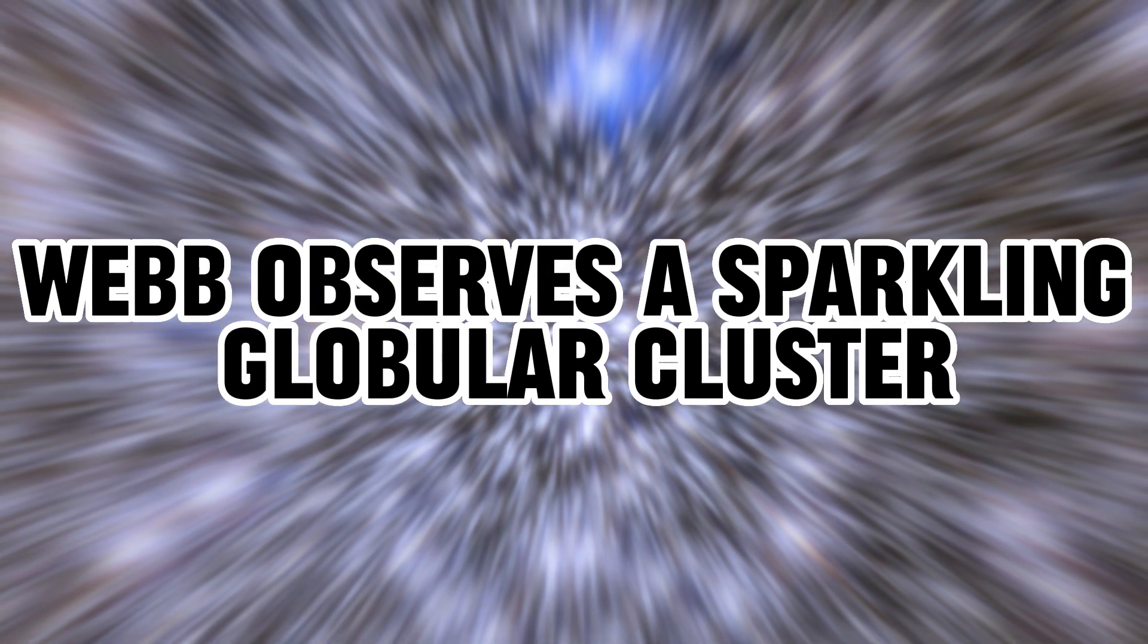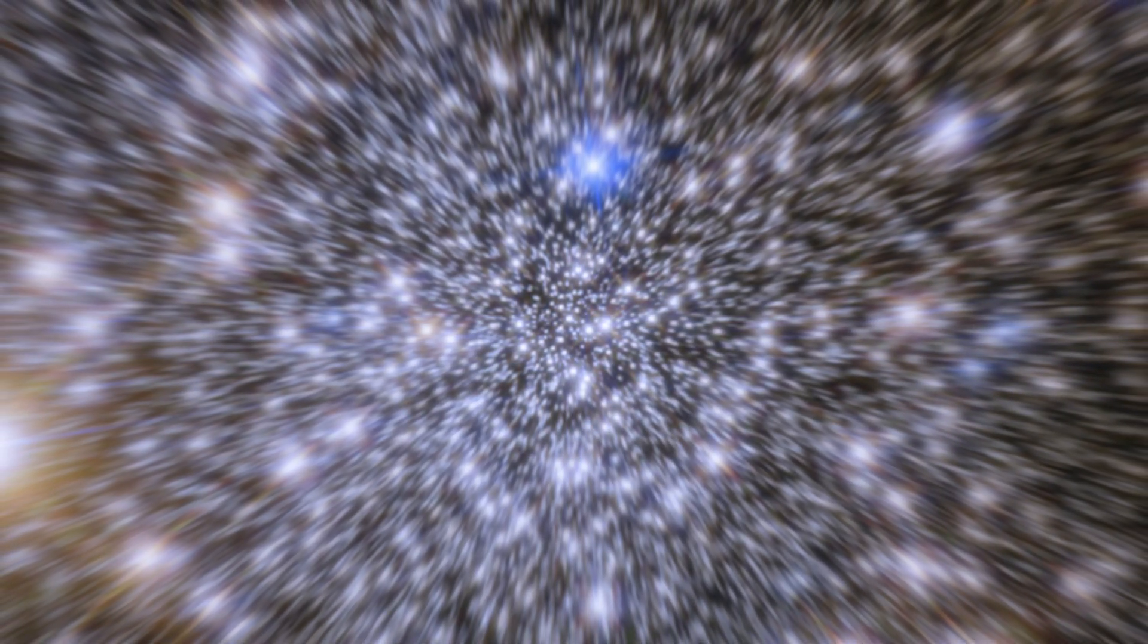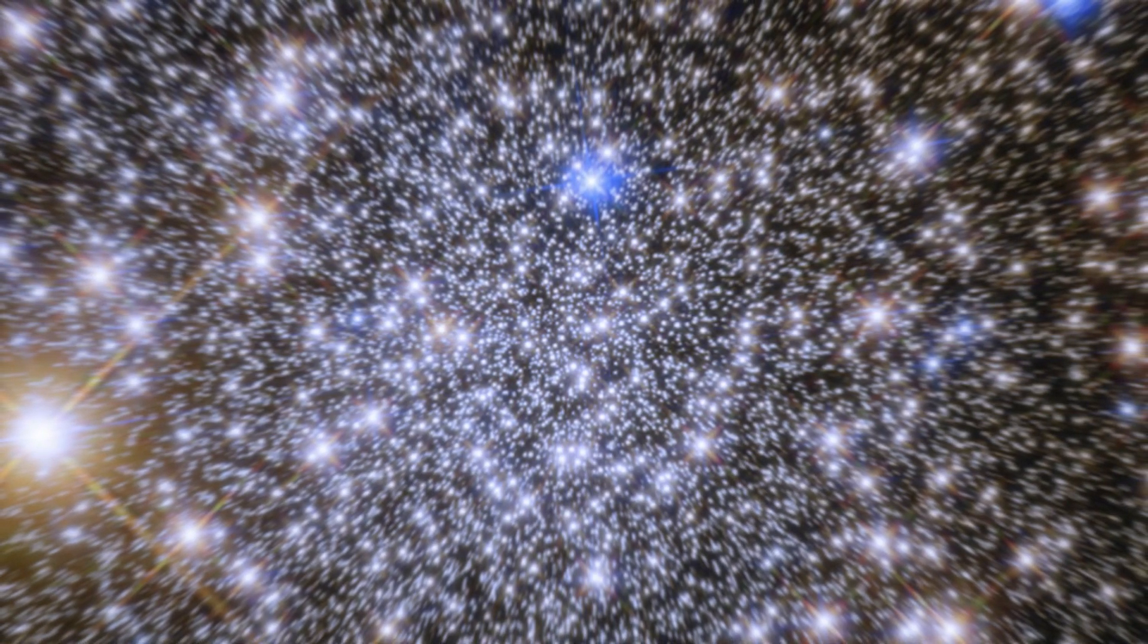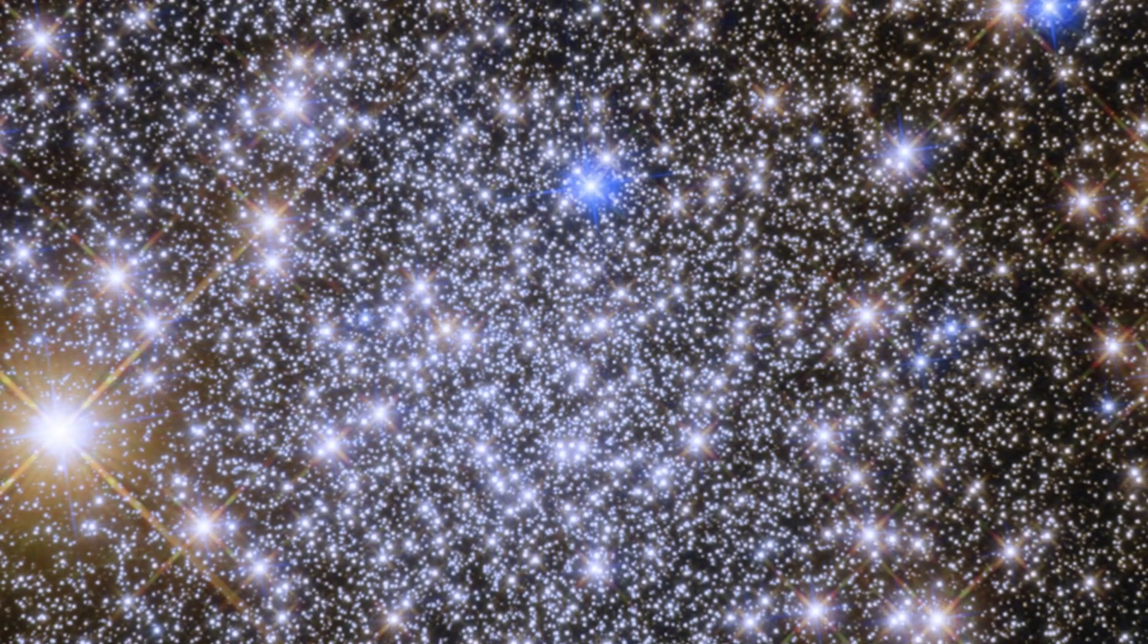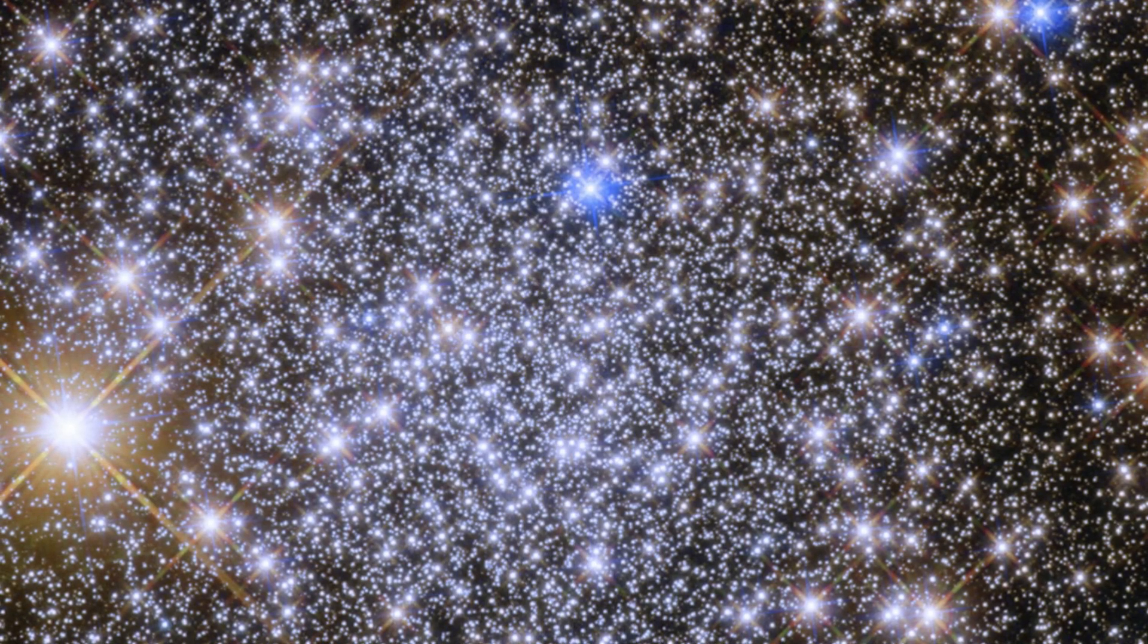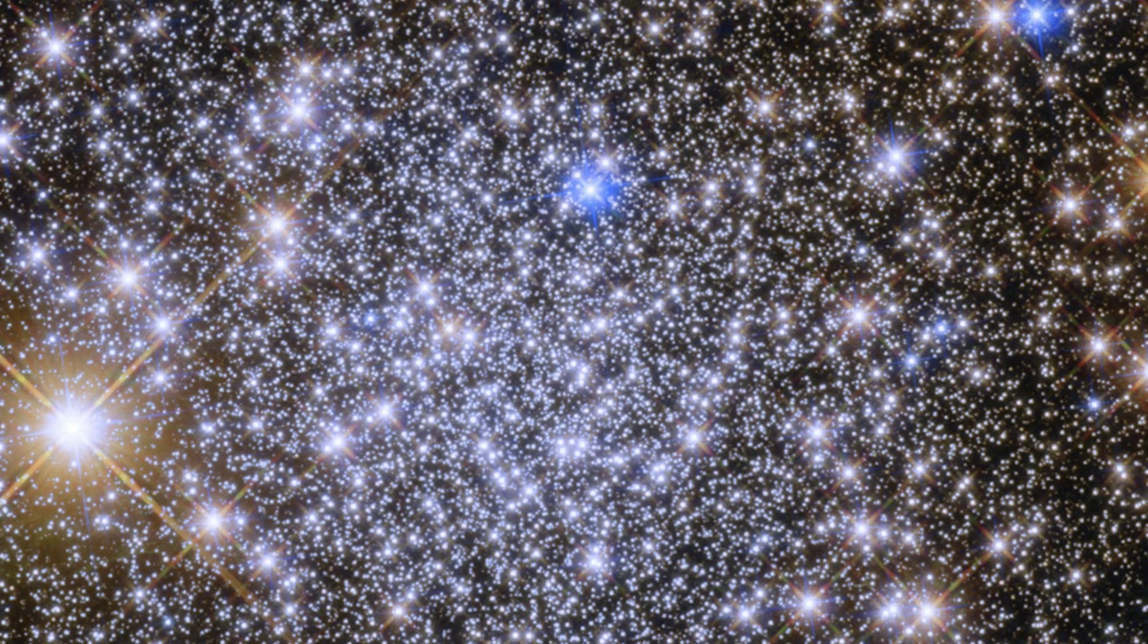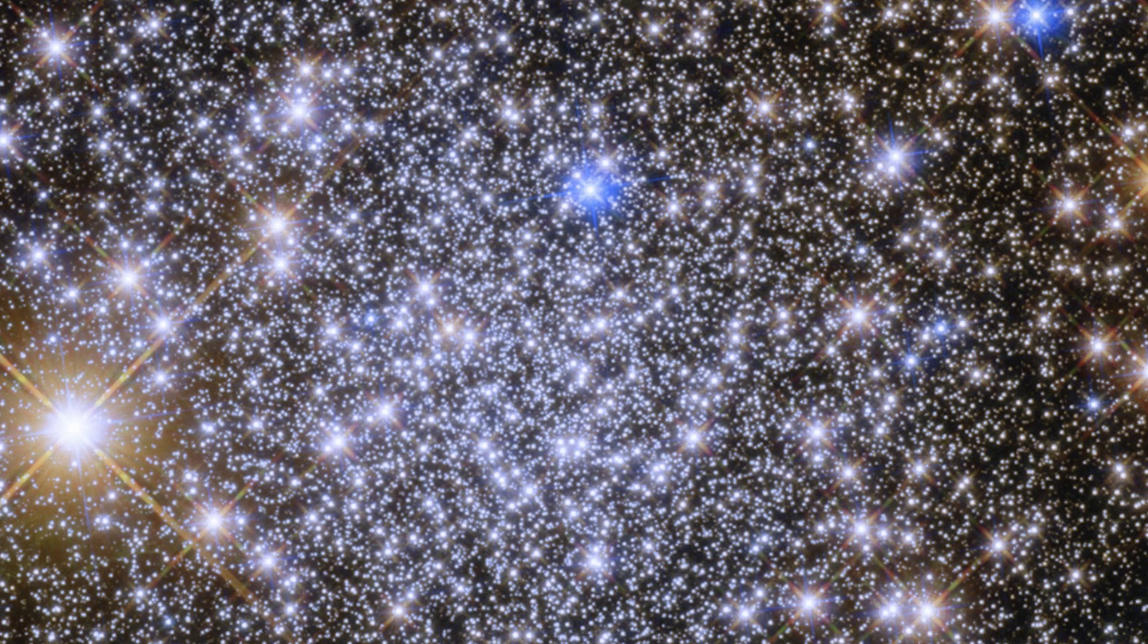Webb observes a sparkling globular cluster. Imagine looking into the night sky and seeing thousands of stars shining thousands of times brighter than the stars in our atmosphere. That's a glimpse into the world of Messier 92, M92, a globular star cluster situated in the constellation Hercules, a staggering 26,700 light-years away from us. A globular cluster is a spherical collection of tightly packed stars, and M92 is one such celestial jewel box filled with about 300,000 stars in a ball just 100 light-years across.